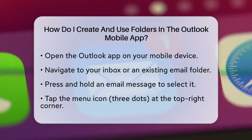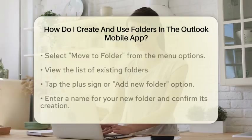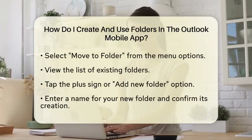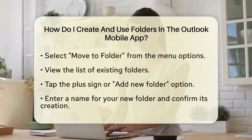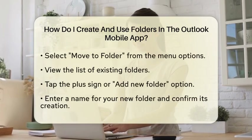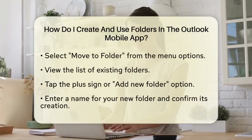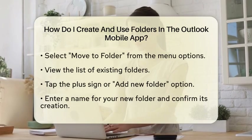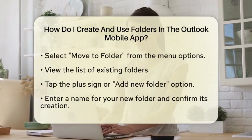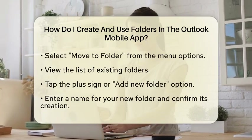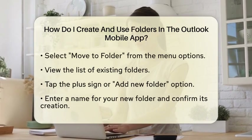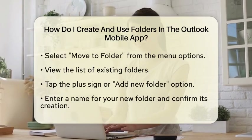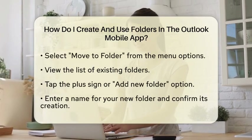Next, look for the menu icon, which is usually represented by three dots or an ellipsis at the top right corner of your screen. Tap on that icon. From the menu that appears, select the option that says Move to Folder. This will bring up a list of your existing folders.